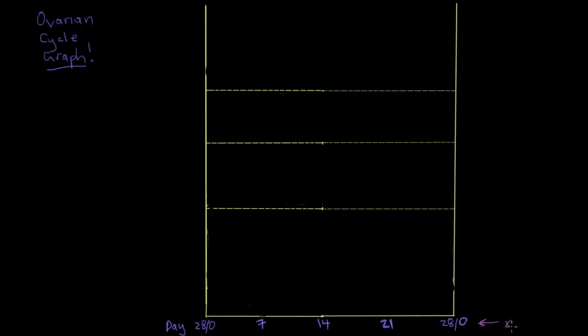The x-axis here is time, and time in this situation is constricted to 28 days because that's how long each reproductive cycle is. It says 28/0 here because the 28th day is the same day as the 0th day. In other words, once you reach day 28 of one cycle, you're on day 0 of the next cycle. There's no gap in between. And remember, ovulation happens here at day 14.